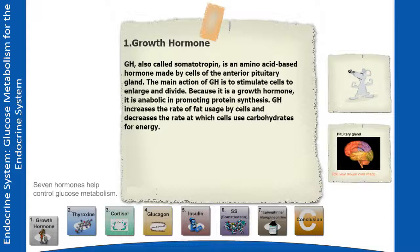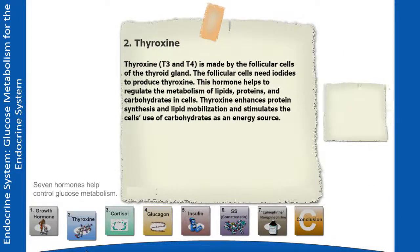Growth hormone (GH), also called somatotropin, is an amino acid-based hormone made by cells of the anterior pituitary gland. The main action of GH is to stimulate cells to enlarge and divide. Because it is a growth hormone, it is anabolic in promoting protein synthesis. GH increases the rate of fat usage by cells and decreases the rate at which cells use carbohydrates for energy.